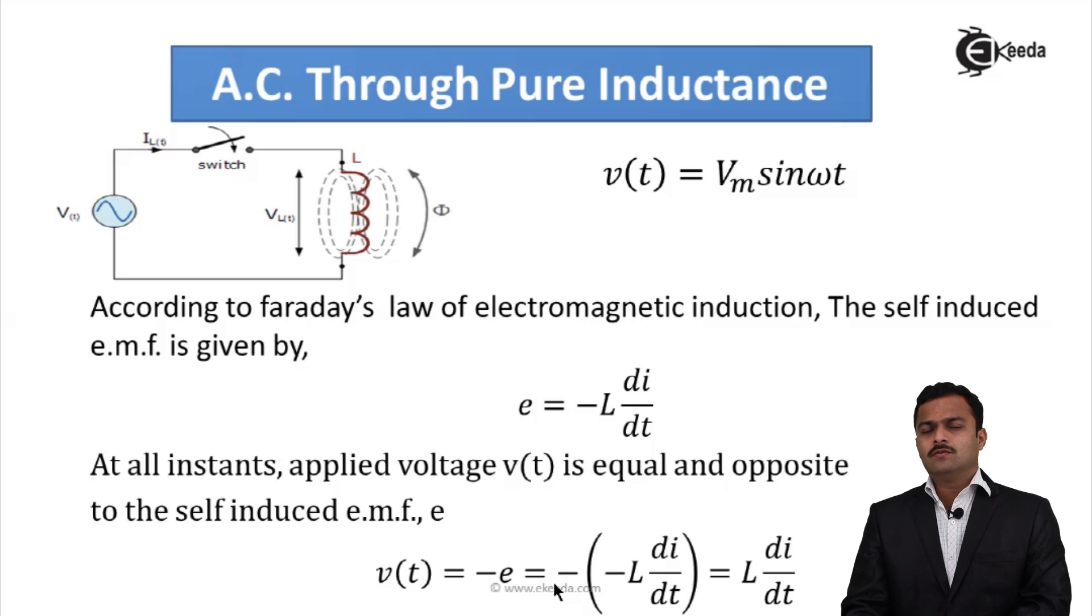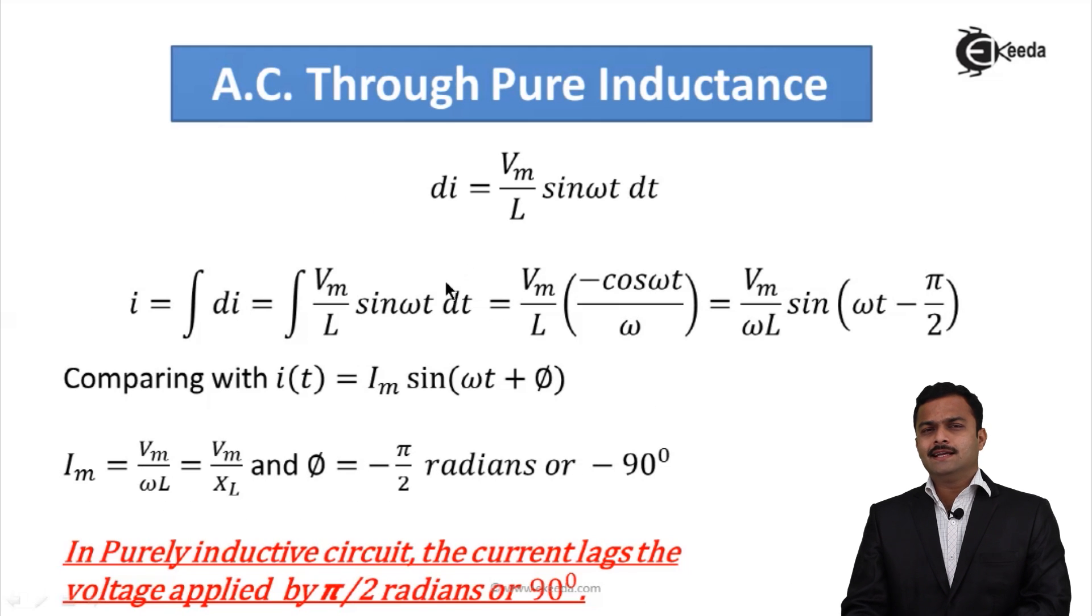What I want is the current I. So for that, I will consider di on one side and remaining term Vm/L sin ωt dt on other side. I want I, so let us integrate.